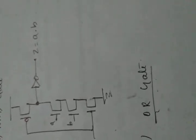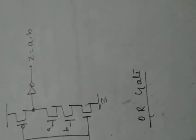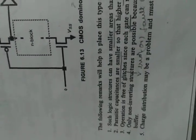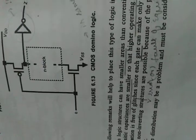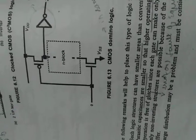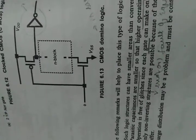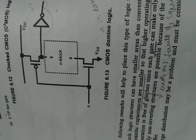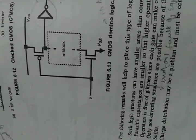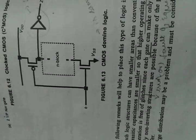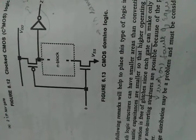Some advantages are: the structures can have a smaller area than conventional CMOS logic. Also, the parasitic capacitors are smaller, so higher operating speed can be obtained.